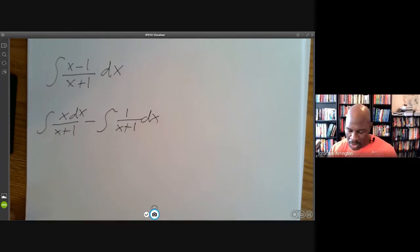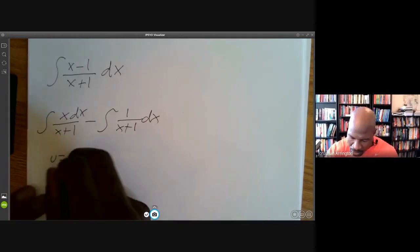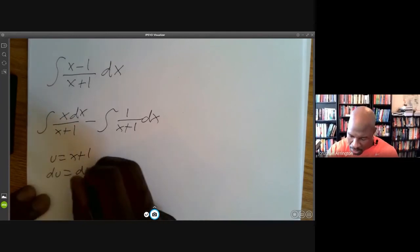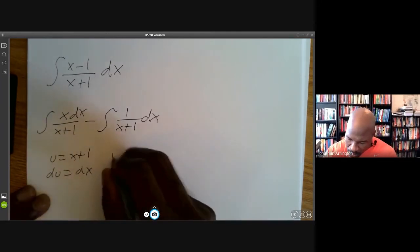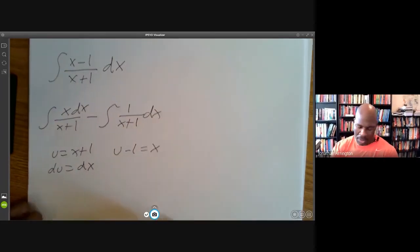To do this u-substitution, I'm gonna say u = x+1, which means du = dx. But what also means is that u-1 = x. So this x dx will be (u-1) du, and my denominator would be u.